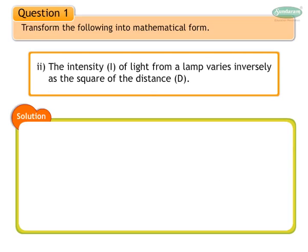Problem 2: The intensity of light from a lamp varies inversely as the square of the distance. Intensity is inversely proportional to distance D square, written symbolically as I is equal to K upon D square, where K is a constant.